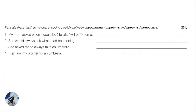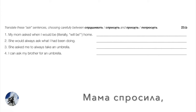Number one: mom asked when I will be home. This is a question — sounds like a one-time question, so we use perfective: Мама спросила. And what did she literally ask? When will you be home? As a reported question, we're saying she asked when I will be home. In Russian we preserve the tense of the original question, unlike English sequence-of-tenses rules: Мама спросила, когда я буду дома.